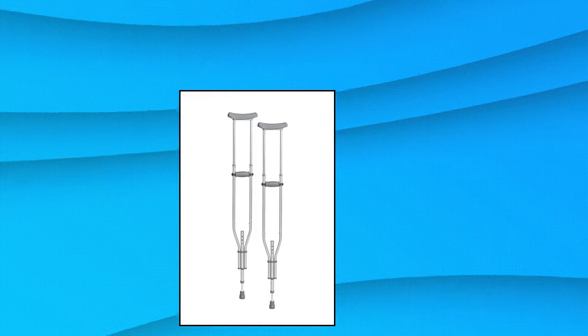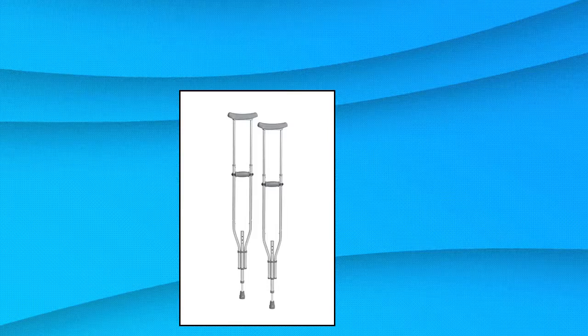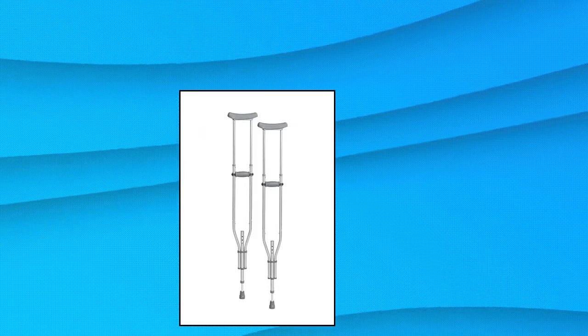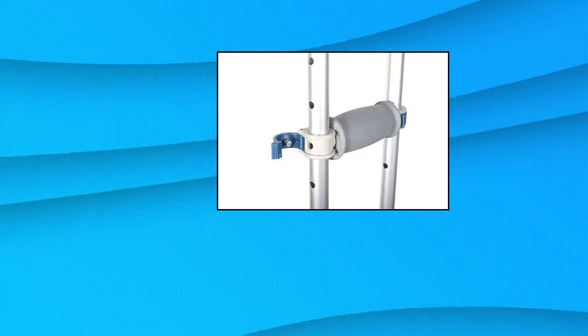Drive Medical RTL 10433 adjustable crutches for walking, adult crutches. Made of aluminum, lightweight crutches provide great support without the heaviness of wood. Capable of supporting up to 300 pounds. Comfortable underarm crutches feature comfortable and durable crutch pads for armpits and hand grips.